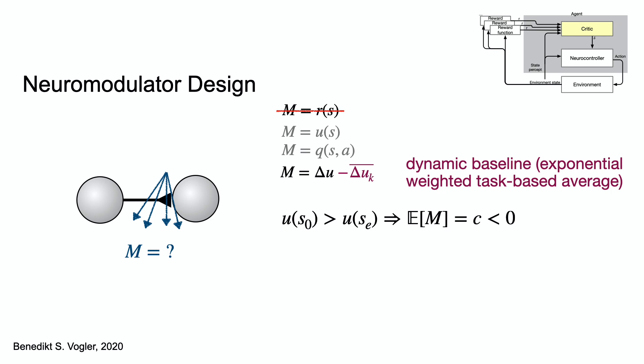It's an exponentially weighted task-based average. This method is equivalent to using the temporal difference error. Therefore, temporal difference learning is a method to learn the state value function in the critic.